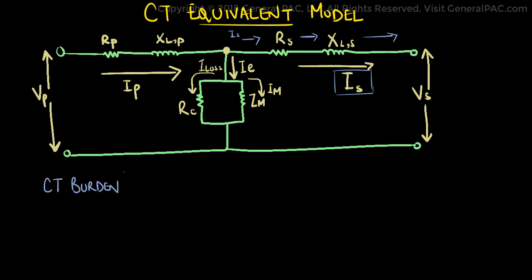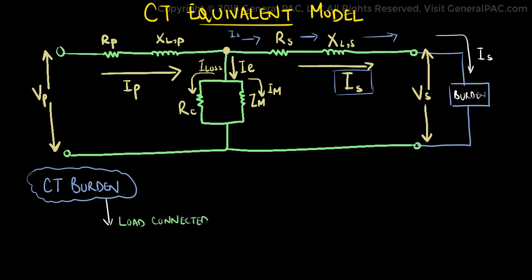Another important parameter to consider is the CT burden which can be defined as the load connected to the secondary side. The CT burden is typically relay and meter impedance, as well as impedance of the wires that connect relays and meters.